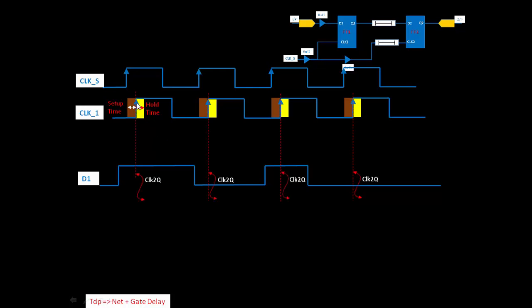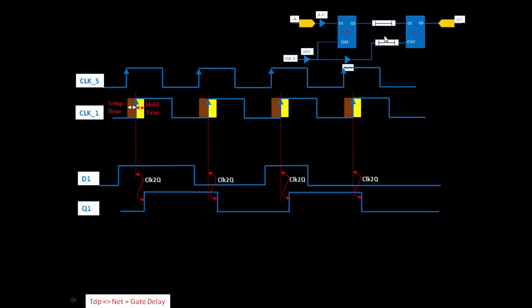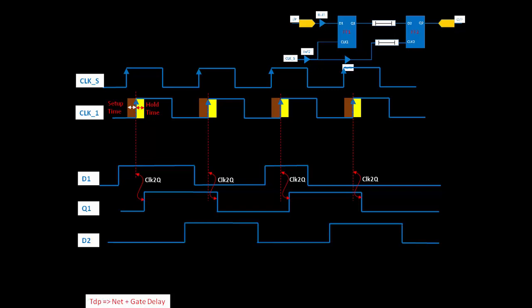When this flip-flop receives the positive edge, after the CLK-to-Q delay, the D1 data is transferred to Q1. When the data reaches Q1, it will travel from Q1 to D2 with a certain propagation delay. That delay has been incorporated here. We were changing the delay between Q1 and D2, and as per that, the D2 waveform was changing in the previous post.